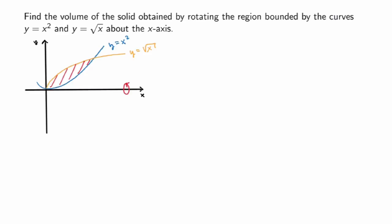I'm going to start by slicing the region itself into rectangles of small but equal width, which I'll call dx. Then I'll rotate each of these rectangles to get a typical slice of the solid of revolution. So if I rotate that particular rectangle, what will I get?